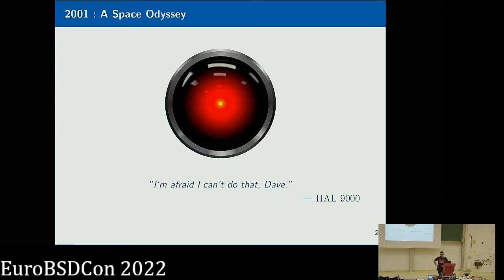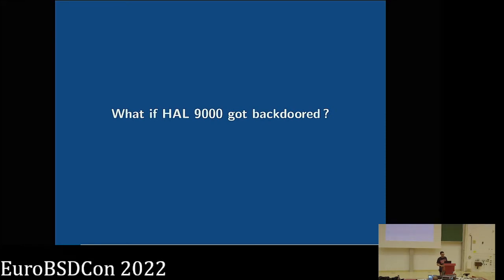I like a movie, I would like to speak to you about an old movie from Stanley Kubrick, which is 2001 Space Odyssey. And in this flick, there is a machine called HAL 9000. And HAL doesn't really behave the way he should actually behave. Why that? What if HAL 9000 got actually backdoored?